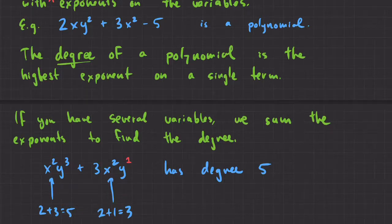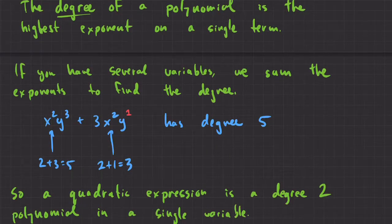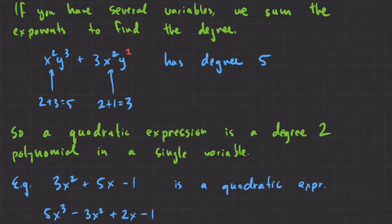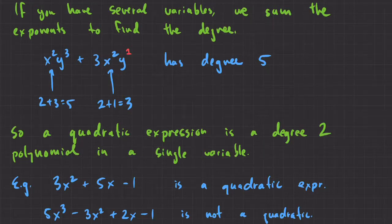So a quadratic expression is a polynomial. I should also point out it only has one variable. We only ever talk about a quadratic expression with a single variable. And that would have a degree of 2. So a quadratic expression is a degree 2 polynomial in a single variable. So this expression here, 3x squared plus 5x minus 1, that's a quadratic expression. If I had something like 5x cubed minus 3x squared plus 2x minus 1 is not a quadratic.